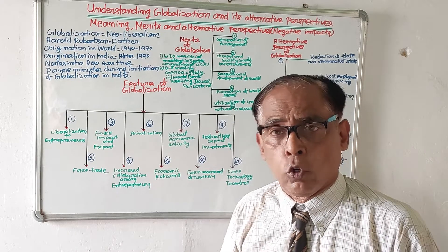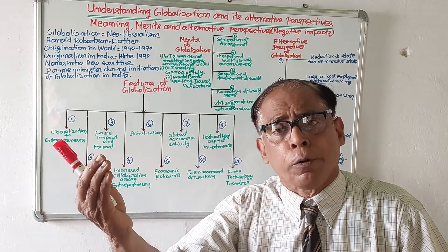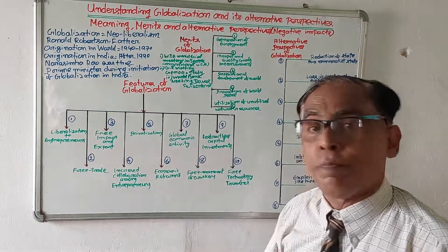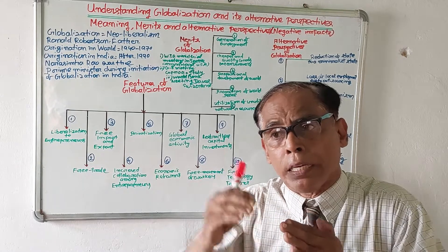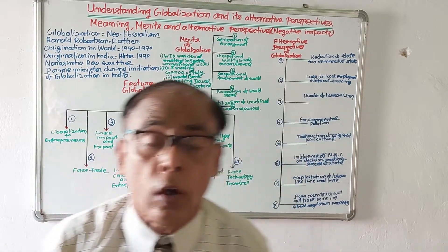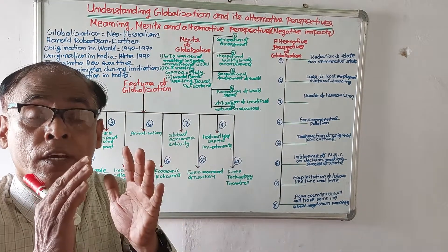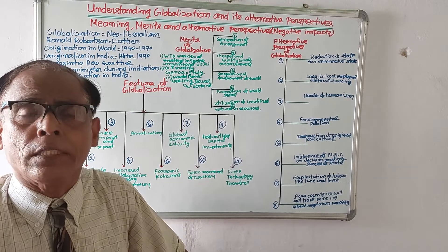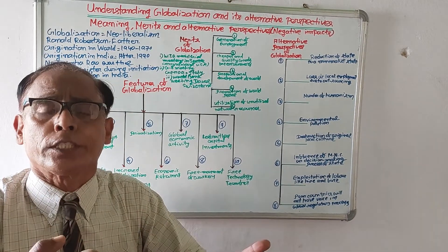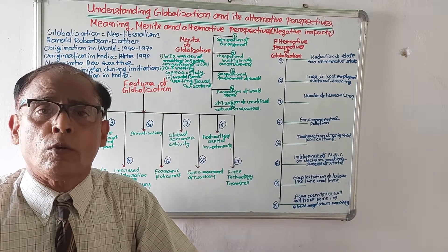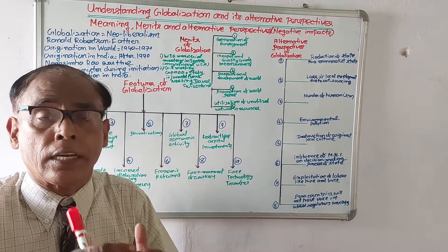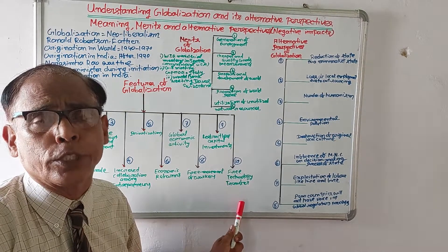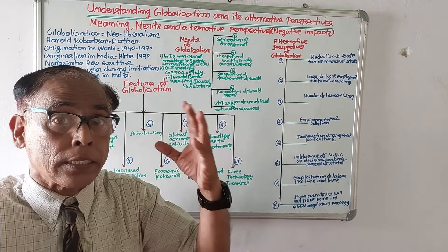Number eight: free movement of workers. In globalization, workers of one country can go to another country for work without any restrictions. Number nine: restraint-less capital investment — capitalists of one country can invest their money in other countries; there will be no restriction on investing in other nations. Number ten: free technology transfer. In globalization there will be no restriction in the transfer of technologies; every country can transfer technology to other countries.